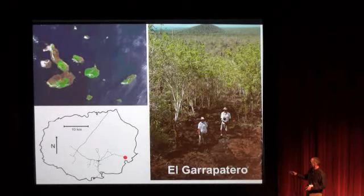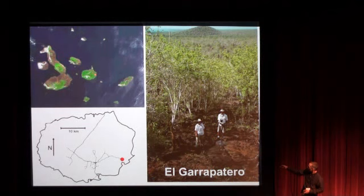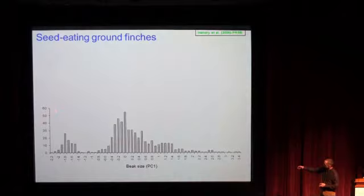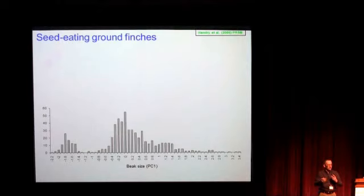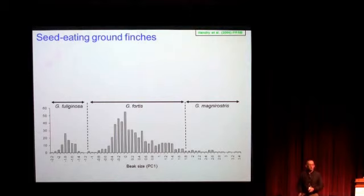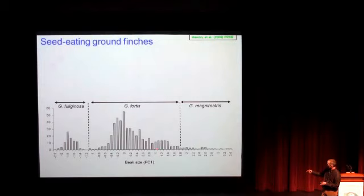We went to a specific site on the island of Santa Cruz, collected finches with mist nets, and looked at the frequency distribution of their beak sizes. You see bumps and dips in the distribution — some corresponding to the different species: the small ground finch here, a long distribution for the medium ground finch, and a few large ground finches which are relatively rare. But what was interesting for us was the distribution of the medium ground finch — you have a small-beak version and a large-beak version within the same species.